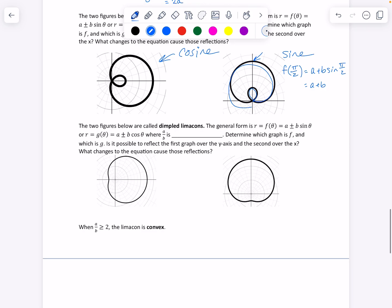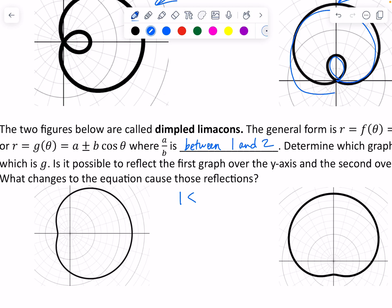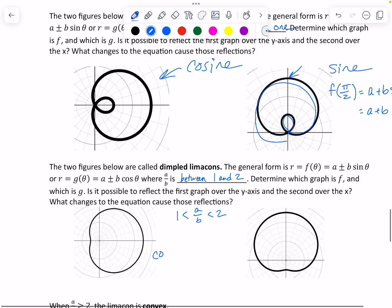Then we have dimpled limacons. And I think what happens with this one is where the A over B is between one and two. So, and maybe a better way to write this is that one is less than A over B, which is less than two. And so, we can get this kind of dimpled shape versus then it becomes convex when it's bigger than two. And once again, this one is cosine because this has that point when I do, when I do F of zero, I get, once again, A plus B, which is going to be that farthest out value. And then this one, it's F of, or maybe, my apologies, G of zero. This is F of, not zero, just testing you, F of pi over two. And that's going to be equal to that A plus B. Okay.